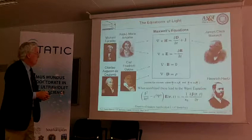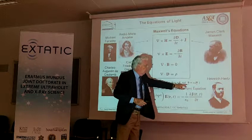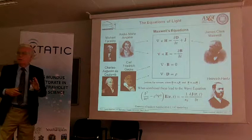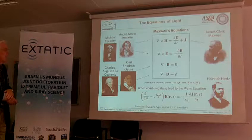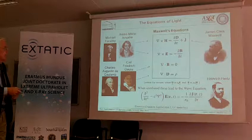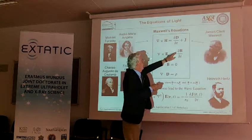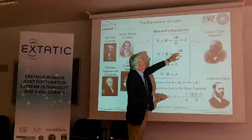Here are Maxwell's equations written in vacuum, where D equals epsilon-zero E and B equals mu-zero H. These are the equations governing the propagation of electromagnetic radiation, including x-rays. If you manipulate these equations properly — combine them and eliminate one variable using the relationship between B and H — you can eliminate that dependence and replace it with E, and come up with a wave equation.